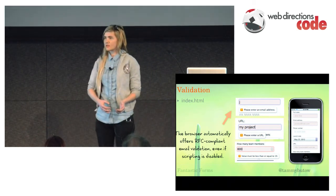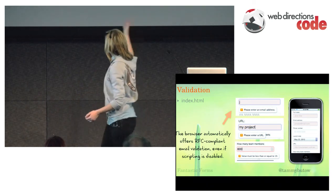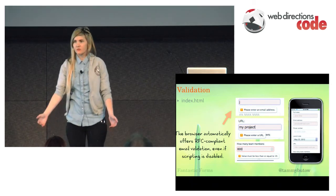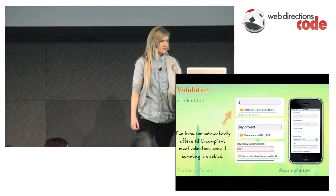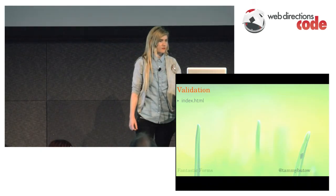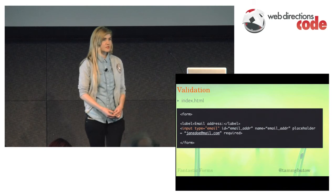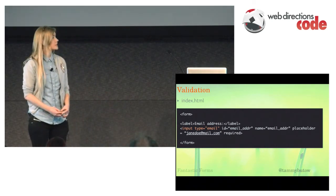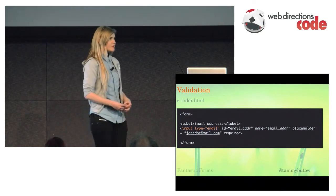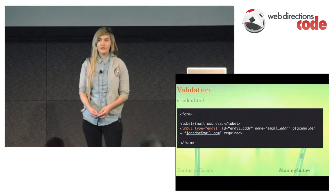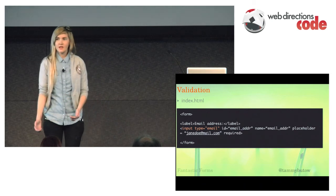Same thing with range — you can set a min and a max, and it's going to say 'value must be less than or equal to 10' because I set the max value to 10, which is really handy. That was where I had input type equals email. These are the sorts of things we could implement today and they're going to work. And if they don't work, they can degrade gracefully or you can use Modernizr to make them work.